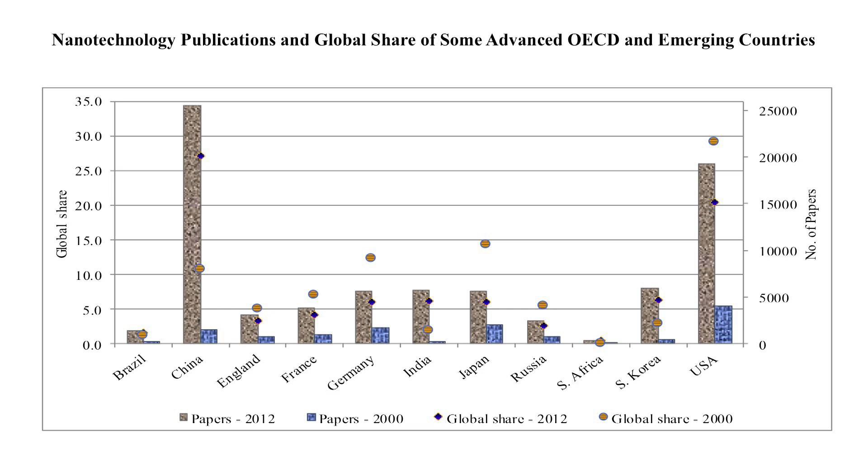In top fields like nanotechnology, USA and China are dominating, but India has also emerged as one of the key players. India's research volume is entering cutting-edge research areas, where India is also publishing very highly, with a rank in the top 5 across the world in some areas.